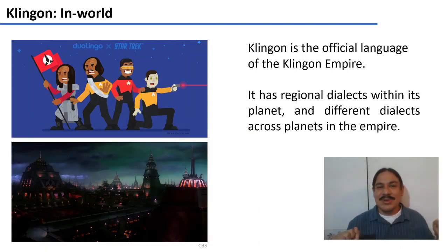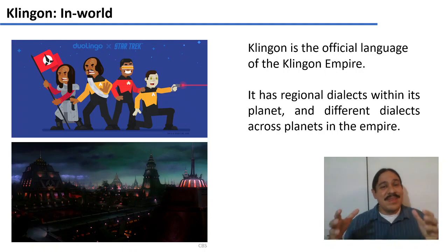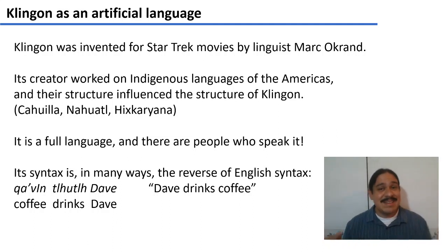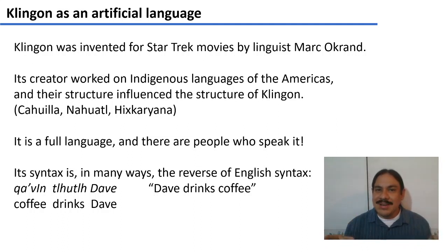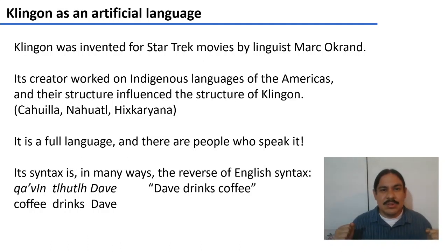Within the fictional world, Klingon is the official language of the Klingon Empire. There's a planet where it's spoken, it has regional dialects within that planet, and there are different dialects on other planets belonging to the empire. In our world, on planet Earth, Klingon is an artificial language made for the Star Trek TV series and movies. Originally they wanted to give some Vulcan words to the character Spock, so they hired linguist Marc Okrand, who had worked on indigenous languages of California — Mutsun and Cahuilla — which have structures not very frequent in other languages of the world, and he used some of those structures to construct Klingon.